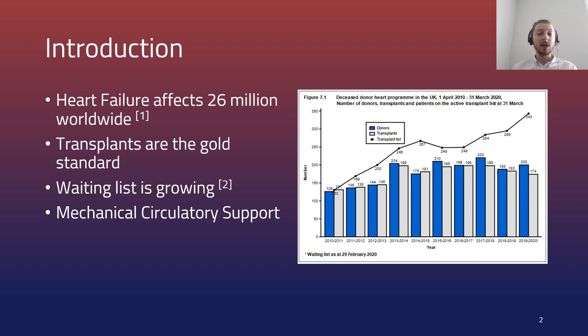To reduce this shortfall and bridge the gap to transplant, doctors can turn to mechanical circulatory support devices such as a total artificial heart which completely replaces the native heart.